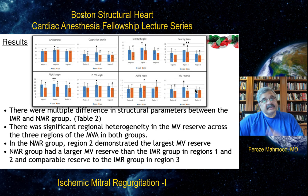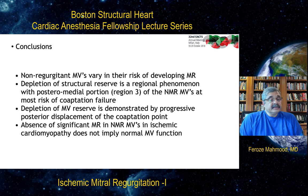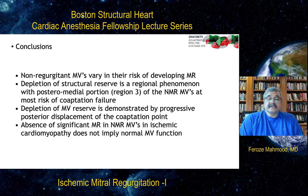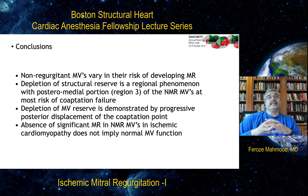This is as yet unpublished data, soon to be published in a journal. Conclusions: non-regurgitant mitral valves vary in their risk of developing mitral regurgitation. Depletion of structural reserve is a regional phenomenon, with the posteromedial portion — P3-A3 — at the most risk for coaptation failure. Depletion of mitral valve reserve is demonstrated by progressive posterior displacement of the coaptation point. Absence of significant MR in non-regurgitant mitral valves in ischemic cardiomyopathy does not imply normal mitral valve function — it really depends on how much structural reserve remains to sustain adverse remodeling.